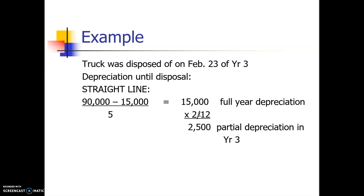Let's say we disposed of the truck in year three on February 23rd. If you hold the asset for 15 or more days during a month, you count that as a full month, so we held it for January and February — two months. We take the $15,000 full year of depreciation and multiply it by 2/12, giving us $2,500 of depreciation expense in year three.